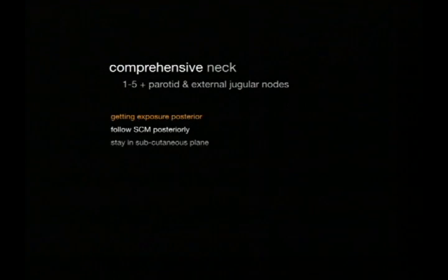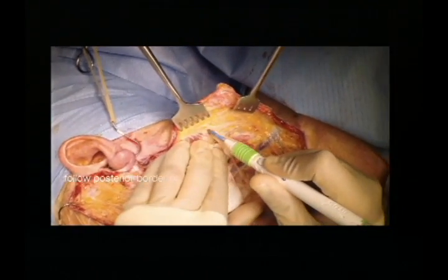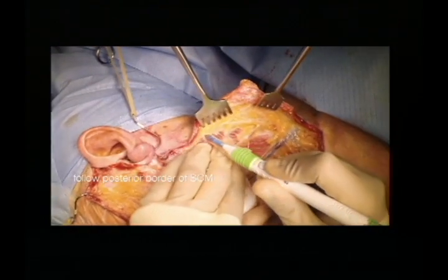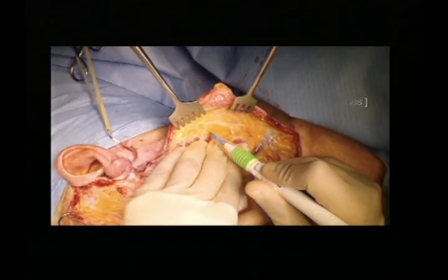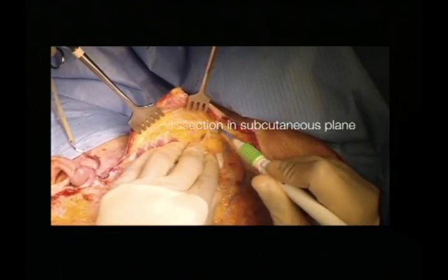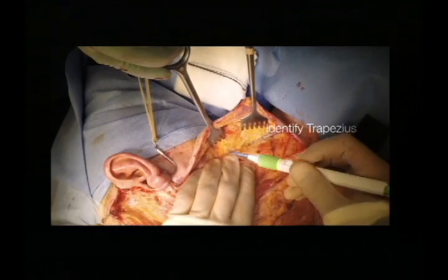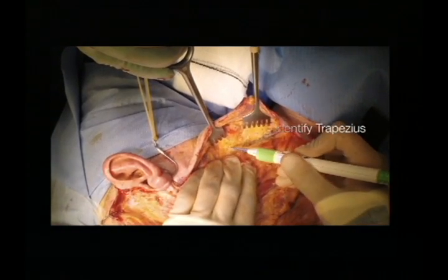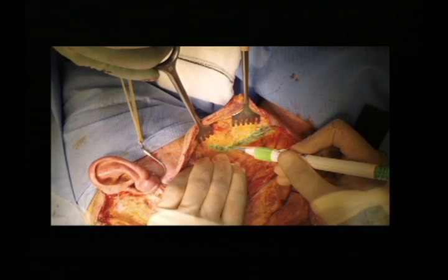Level 5 is something which is a bit of a dying art, particularly in metastatic skin. To get posterior exposure, we stay along the posterior border of the sternocleidomastoid muscle, relatively superficial, with the external jugular vein left down. At this stage in our subcutaneous plane we're heading for the trapezius muscle, trying to identify it and stay on its superior border — that will help delineate the most posterior aspect of our dissection.